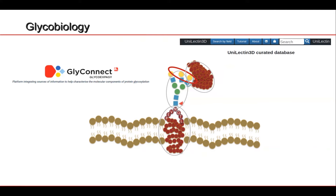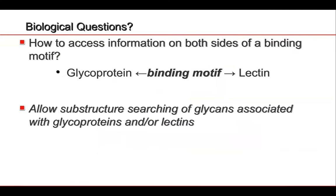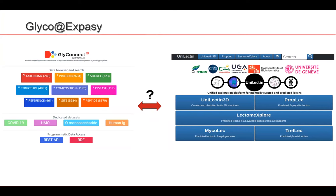We can imagine a biological question that might ask: how could I access information on both sides of a binding motif — information about both the glycoprotein and the lectin? This talk is aimed at a biologist or glycobiologist asking these kinds of questions. What we need to do is allow substructure searching of glycans that are associated with glycoproteins and the lectins that recognize them — creating a link between GlyConnect and Unilectin.